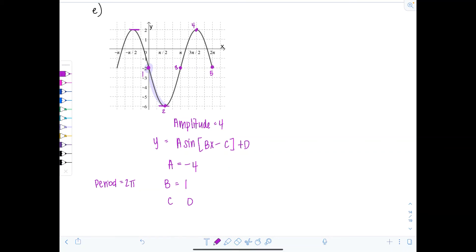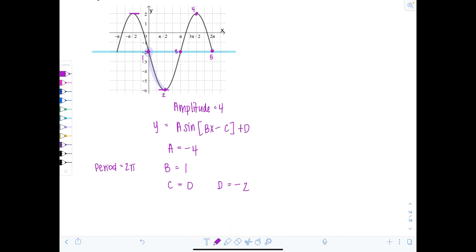C equals zero. And then d, vertical shift, it looks like it's been shifted down two units. So d is going to be negative two, right? This is our new middle. So putting it all together, we could say this is the equation of y equals negative 4 sine of x minus 2.